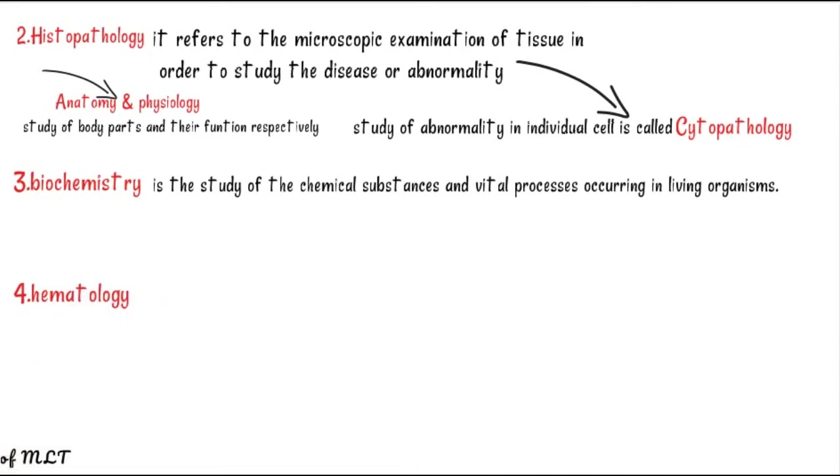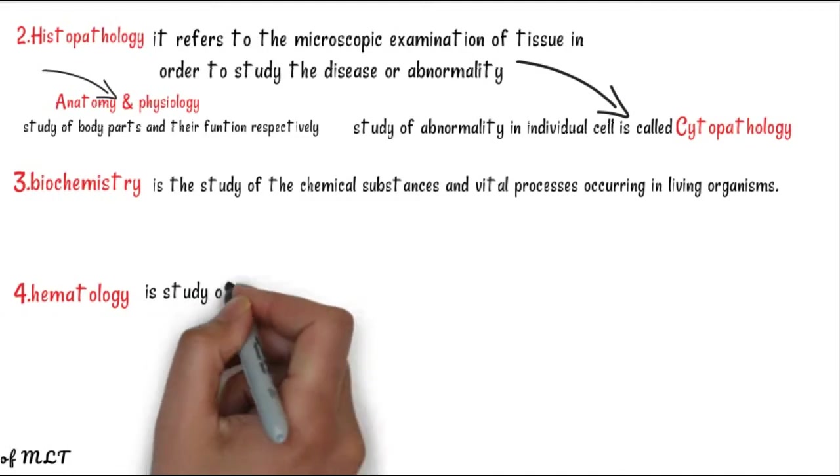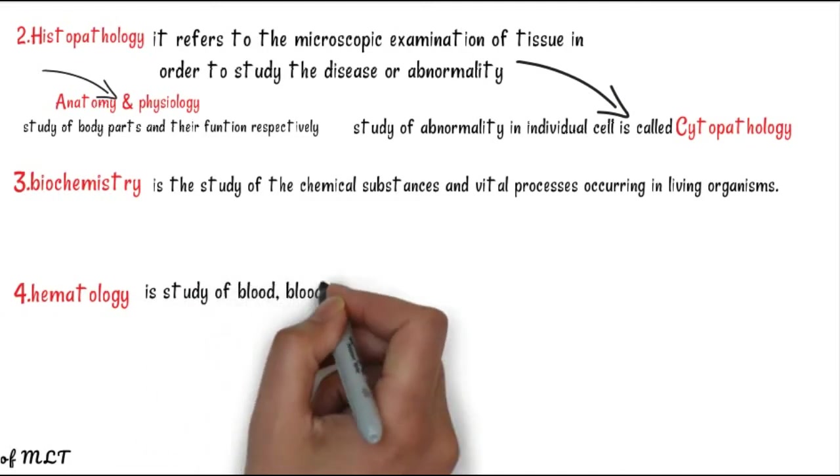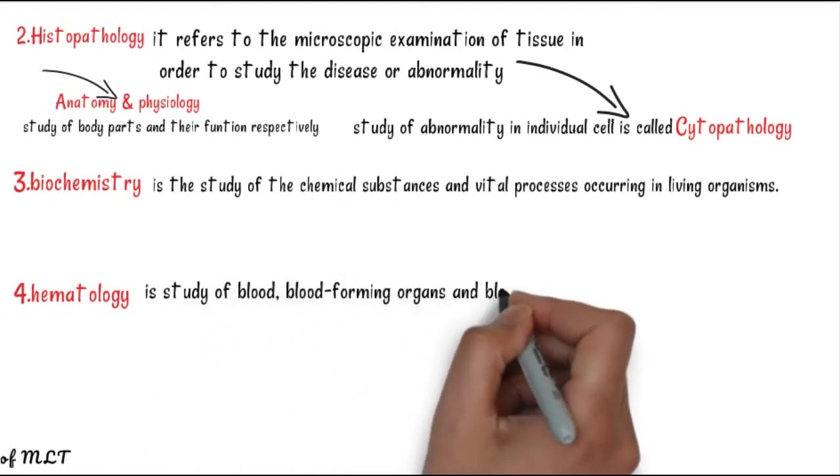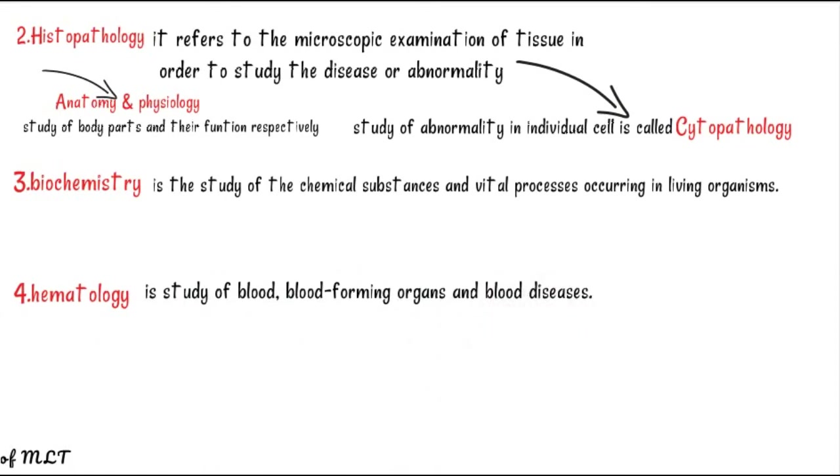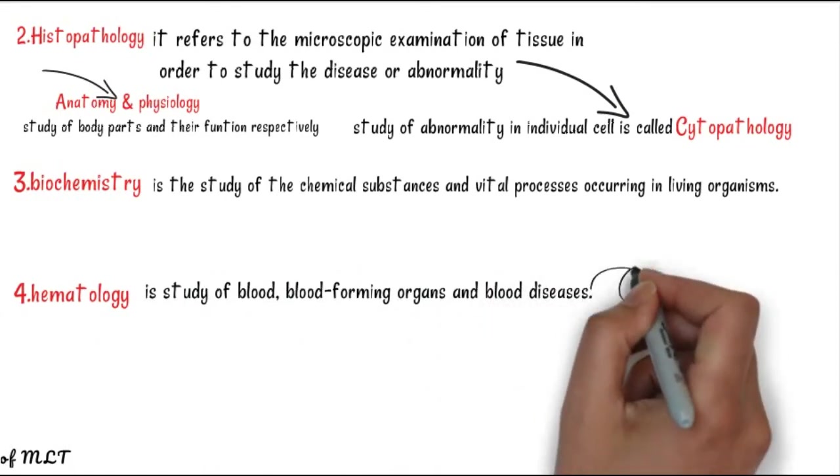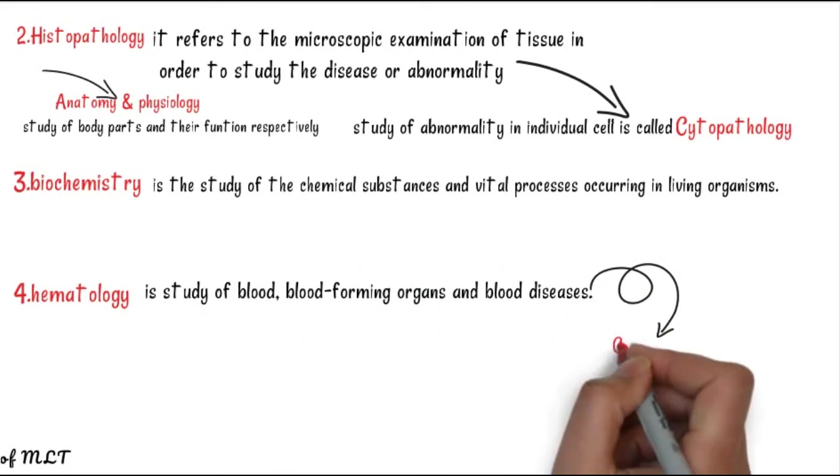Biochemistry is the study of chemical substances and vital processes occurring in living organisms. Hematology is the study of blood, blood-forming organs, and blood diseases. Another term is coagulation pathology - the study of bleeding disorders.